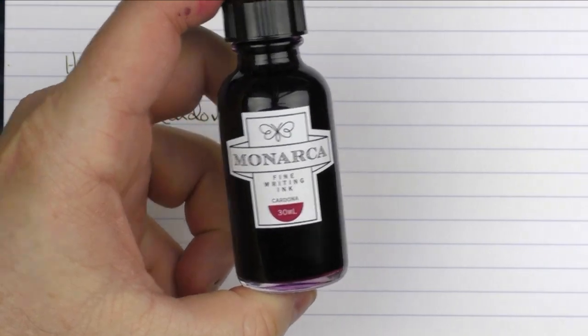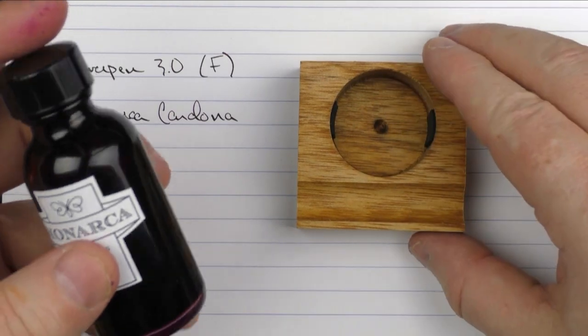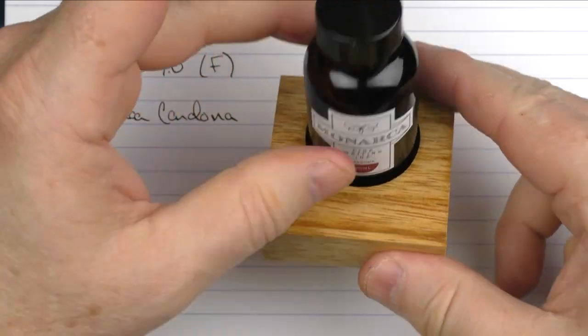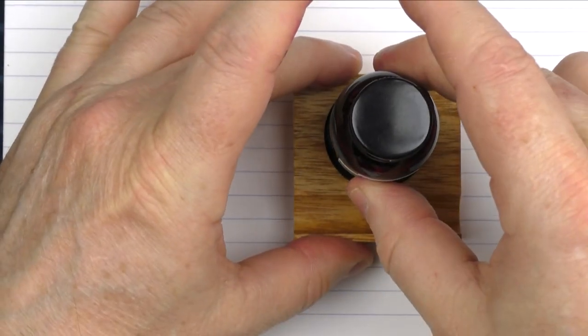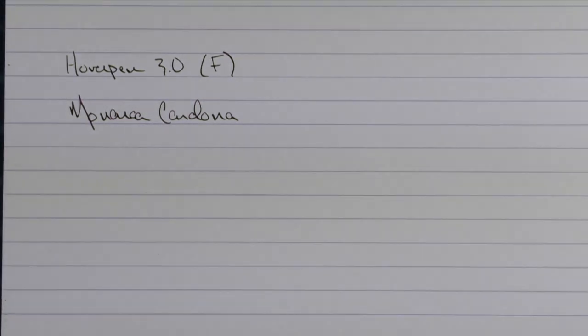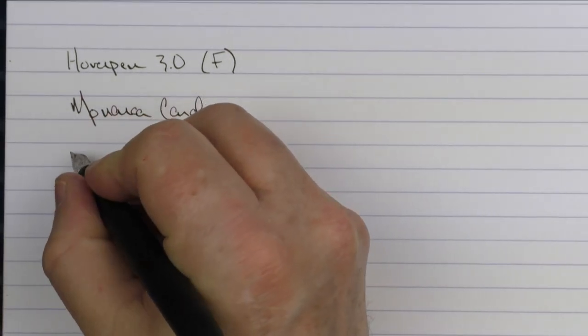This is what the bottle looks like. One of the really cool things is it comes with this little wood stand so you can put the ink in there. It has a little pen rest in the front, and then when you're inking your pen, then there's no risk of it turning over, which is a really nice design. And here we go with the rest of the writing sample.